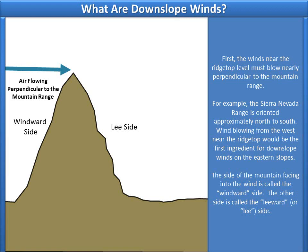First, the winds near the ridgetop level must blow nearly perpendicular to the mountain range. For example, the Sierra Nevada range is oriented approximately north to south. Winds blowing from the west near the ridgetop would be the first ingredient for downslope winds on the eastern slopes.